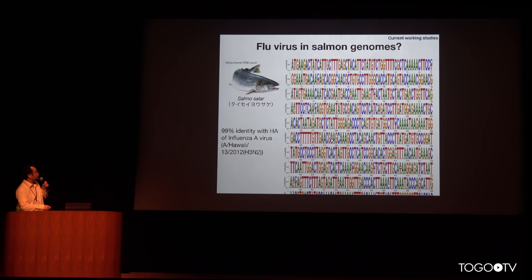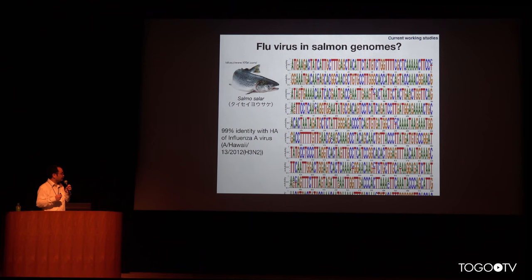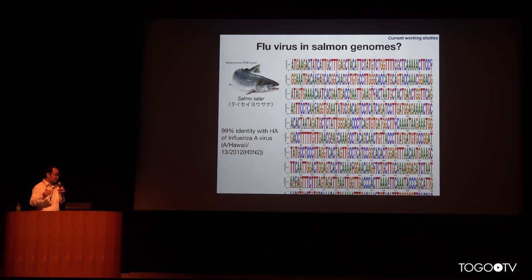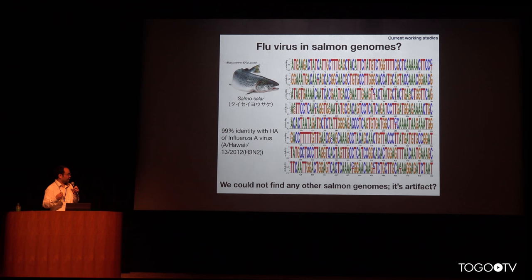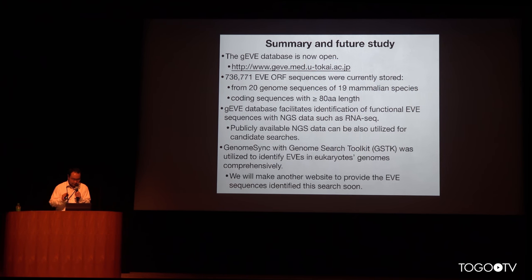I also found influenza virus-like sequence in salmon genomes with 99% nucleotide similarity. However, we doubt this result because several salmon genome sequences are available, but only this one particular species showed integrated influenza A virus sequence. Compared to the filovirus case — which was found across multiple rodent species — this high-similarity single-species finding suggests it may be an artifact, possibly from contamination during sequencing. So we need to carefully determine whether such findings are truly integrated in genomes, just artifacts, or a novel discovery.